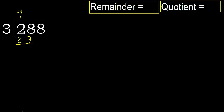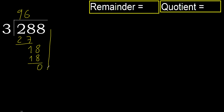28 minus 27 is 1. Next, bring down 18. 3 multiplied by 7 is greater, so 3 multiplied by 6 is 18. 18 is not greater. Subtract. Next, there is no number remaining.